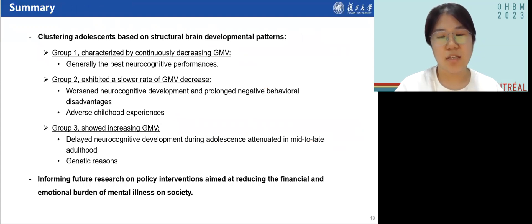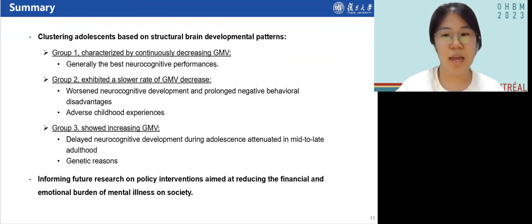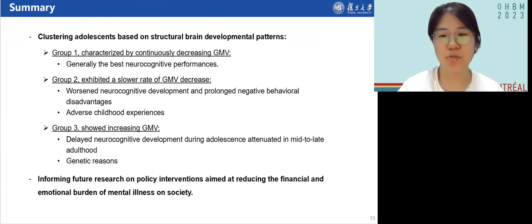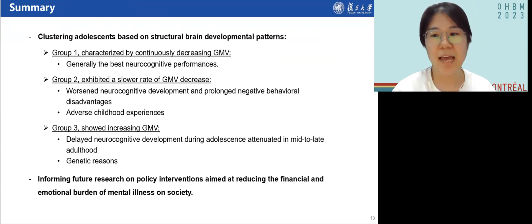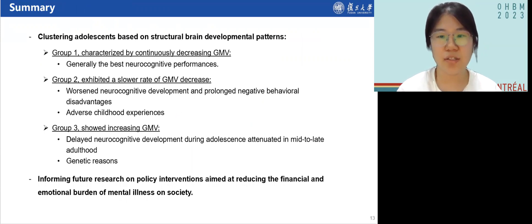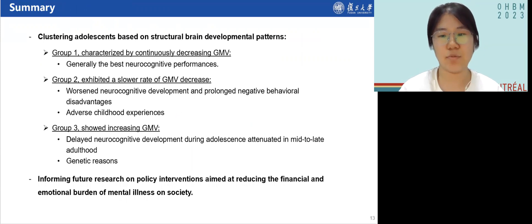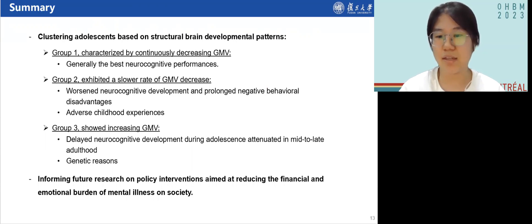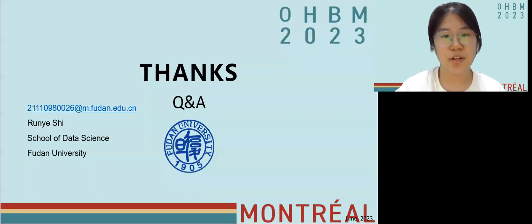To sum up, our study identified three groups with distinct structural brain developmental patterns and may have some policy implications. For example, building healthy family relationships during childhood and early intervention to avoid continued deterioration of behavioral problems and mental symptoms are needed for adolescents in group 2. As for group 3, educational programs need to be tailored to accommodate their delayed neural development before their brain fully matures.